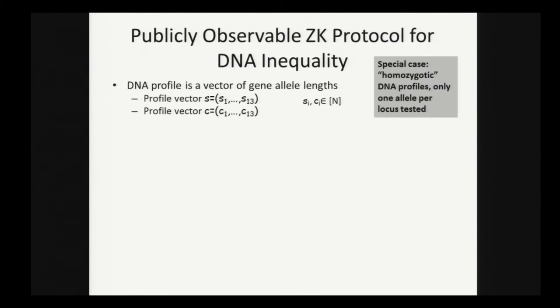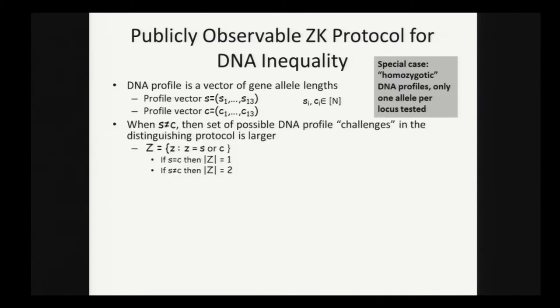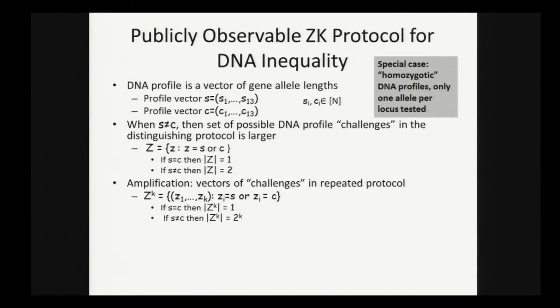The DNA profiles are a vector of gene allele lengths. Let's assume that they're length 13, and each value is somewhere between 0 and n. When s is not equal to c, the set of possible DNA profile challenges from the private coin protocol is 2 rather than 1. When you consider the repeated protocol, there are 2 to the k possible vectors of challenges rather than 1.